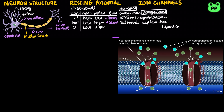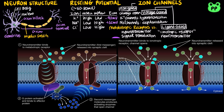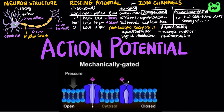Ligand-gated ion channels, or ionotropic receptors, are activated by the binding of a ligand, which is a chemical messenger such as a neurotransmitter. On the other hand, metabotropic receptors are also activated by the binding of ligands; however, they are not ion channels, but the receptors of a signal transduction pathway, which acts slower but is more amplified than ionotropic receptors. Lastly, mechanically-gated ion channels are activated by mechanical stretch. Examples include the bending of hair cells in response to sound waves, as well as the activation of sensory neurons in response to touch.